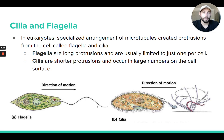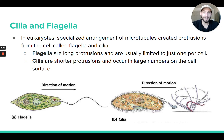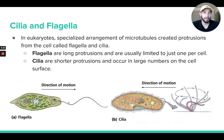We do see flagella in bacteria and in different types of protists. There are some eukaryotic cells that have flagella — for example, in humans, there's one type of human cell that has a flagella and that's the sperm cell. A sperm cell has a flagella — it whips around and helps propel the cell through its environment.